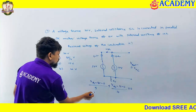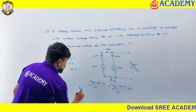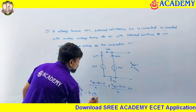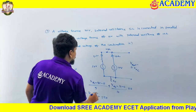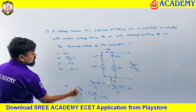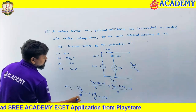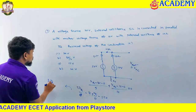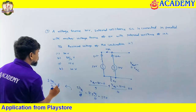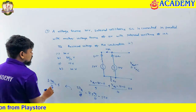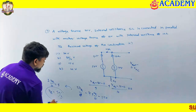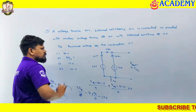Simplifying: Vth by 5 minus 4 plus Vth by 10 minus 1 equals 0. Writing Vth by 5 as 2Vth by 10, we get 2Vth by 10 plus Vth by 10 equals 5. So 3Vth by 10 equals 5, meaning Vth equals 50 divided by 3 volts. Option 2 is correct.